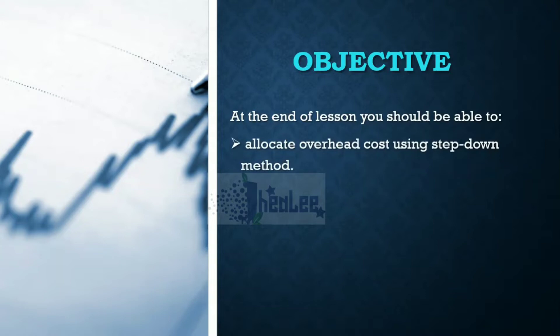Now, remember you were introduced to four methods. We have looked at the direct allocation method. If you have missed that lesson, the link will be in the description below. Today we're going to focus on using the step down method.